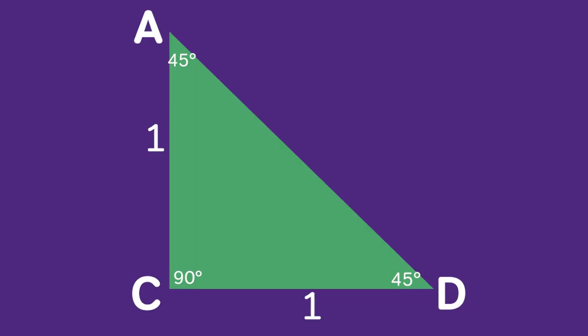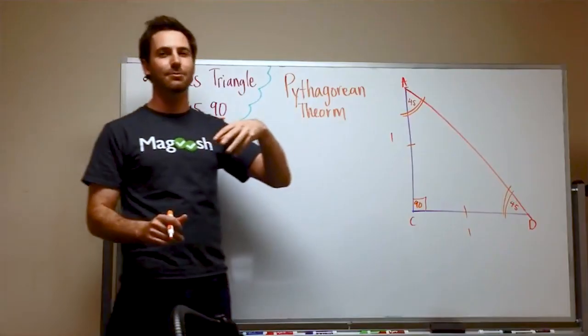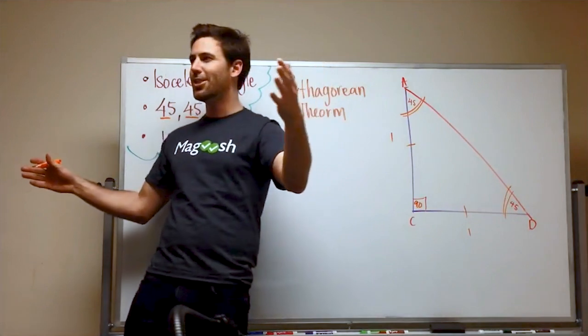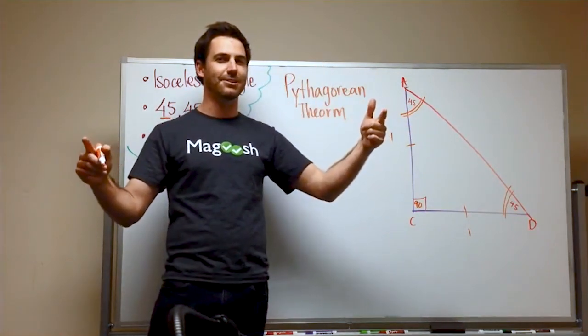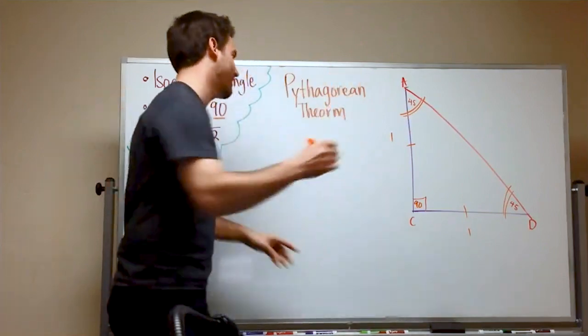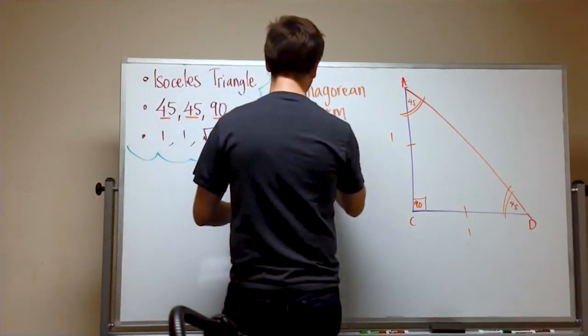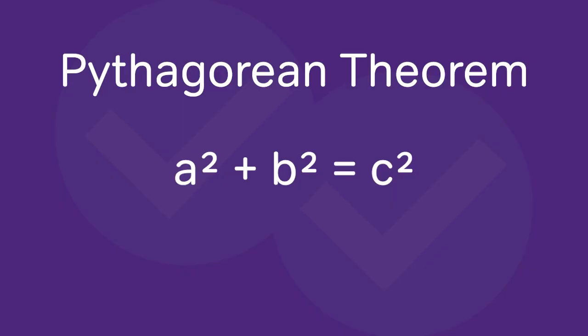And we can figure out the side AD using the Pythagorean theorem. Does anybody remember the Pythagorean theorem? I know somebody out there does. I can hear you. Oh, yes, yes. A squared plus B squared equals C squared. Very well done.